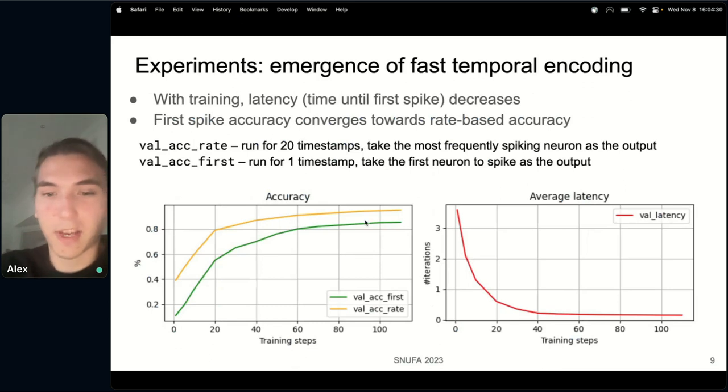And here just repeating this experiment averaging over multiple samples, we'll see that latency, the time it takes the network to produce the first spike, is decreasing with more training steps. And the accuracy that we get from the very first spike, which we call val_acc_first, is quickly converging to the accuracy that we get by rate based evaluation of averaging the number of spikes over 20 time steps. So initially there is a huge gap between them, so the performance is obviously miserable for the first spike but for rate there is already some significant performance improvement in the beginning. But there is still a huge gap. However eventually this gap is decreasing as fast temporal encoding is emerging there.